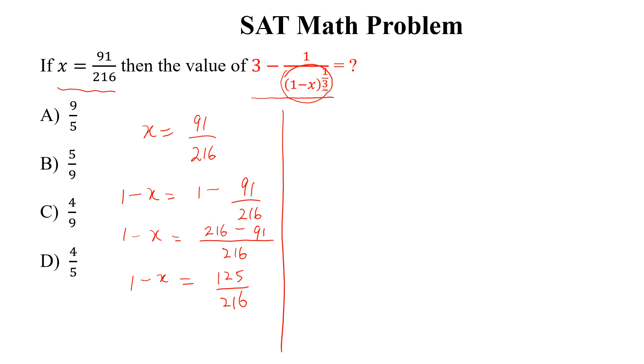Now we know that 125 can be written as 5 to the power 3, divided by 216, which we can write as 6 to the power 3. By taking the power 1/3 on both sides, we get 5/6. So the value of this is 5/6.